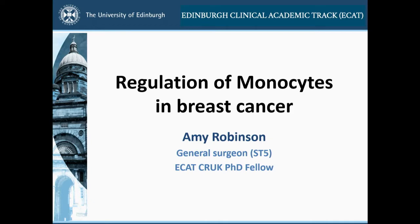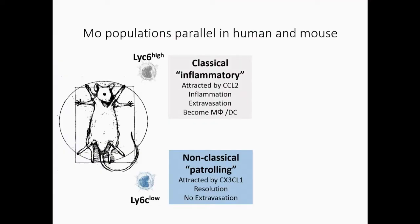So I'm going to talk to you about that today. It's going to be slightly different to a lot of the other presentations. There are no karyotype imaging. And I hope it's not too patronising. I work in mice, and most people in this room are more interested in humans. So just to recap on mice, there are two populations of monocytes.